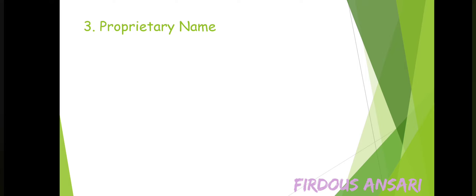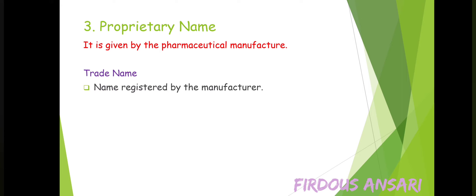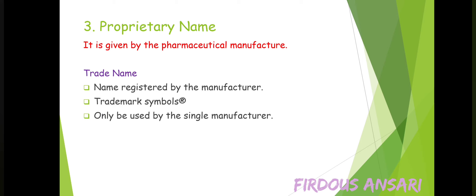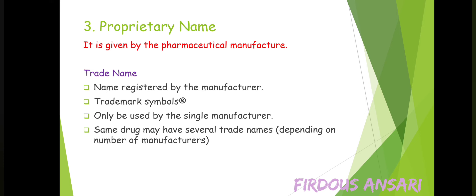Lastly, talking about the proprietary name. It is given by the pharmaceutical manufacturer. It is the trade name — the name registered by the manufacturer — and trademark symbols will be present. It can only be used by a single manufacturer. The same drug may have several trade names depending on the number of manufacturers, and the first letter of the name is capitalized.